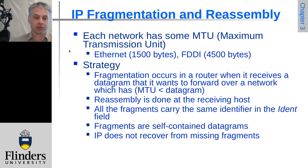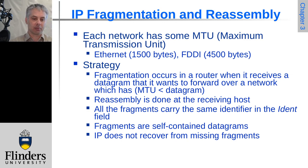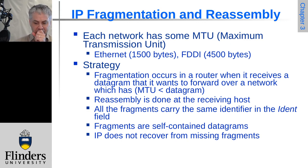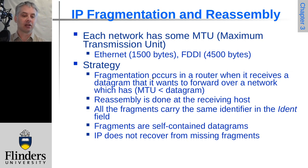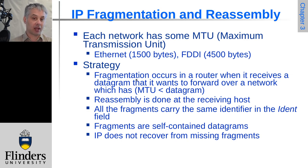IP supports fragmentation and reassembly because every network has a maximum frame or packet size — the MTU. On Ethernet this is traditionally 1500 bytes; FDDI can handle around 4.5 kilobytes; ATM was only 53 bytes, which is clearly a problem. If a datagram exceeds the MTU, it must be fragmented. The router that receives a large packet and needs to forward it onto a link with a smaller MTU performs the fragmentation, and the packet stays fragmented all the way through to the receiving host.